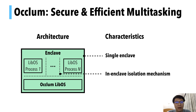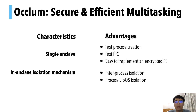The architecture has two characteristics. First, all LibOS processes reside in the same enclave, similar to the single-enclave approach. Second, it incorporates an in-enclave isolation mechanism. This brings advantages in terms of both performance and security. Thanks to the single-enclave architecture, LibOS processes are faster to create and can communicate by sharing memory inside the enclave — no encryption or decryption needed. Since all LibOS processes share a single LibOS instance, it's easy to implement an efficient encrypted file system. For security, with the in-enclave isolation mechanism, we can enforce inter-process isolation and process-LibOS isolation.